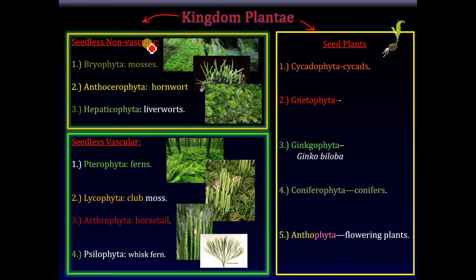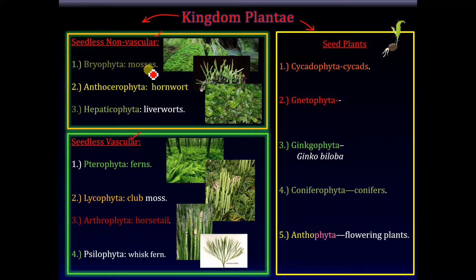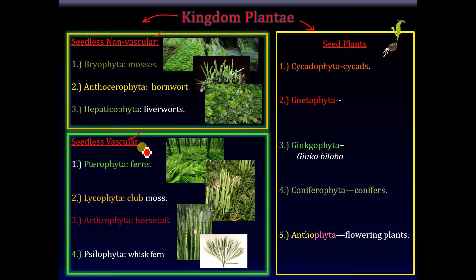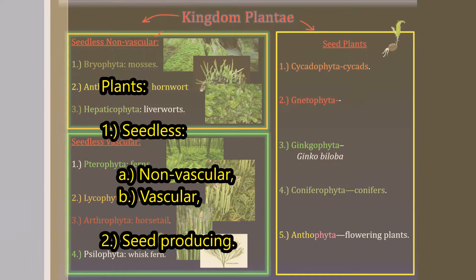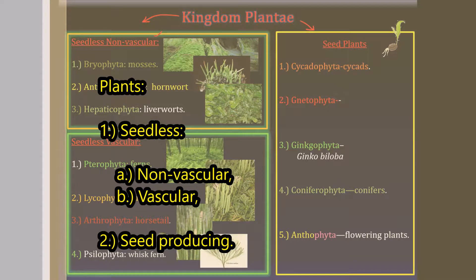Among the seedless plants, we had divided them further into non-vascular plants and vascular plants. The non-vascular plants included the mosses, the hornworts, and the liverworts, and the seedless vascular plants included the ferns, the club mosses, the horsetails, and the whisk fern.